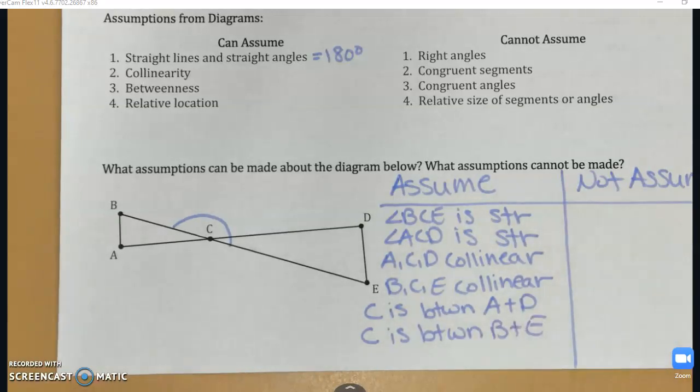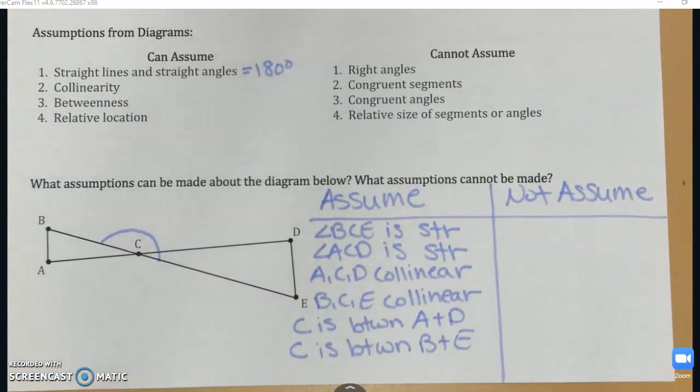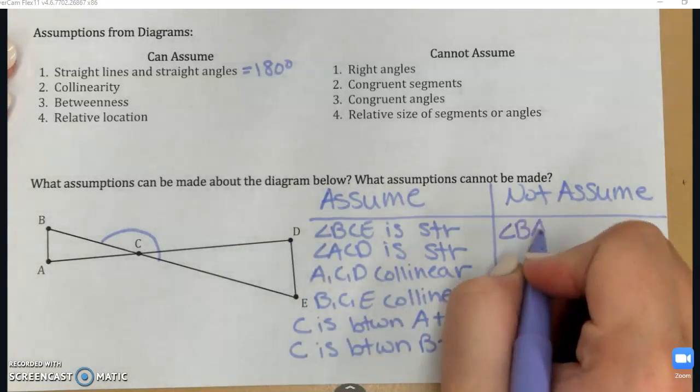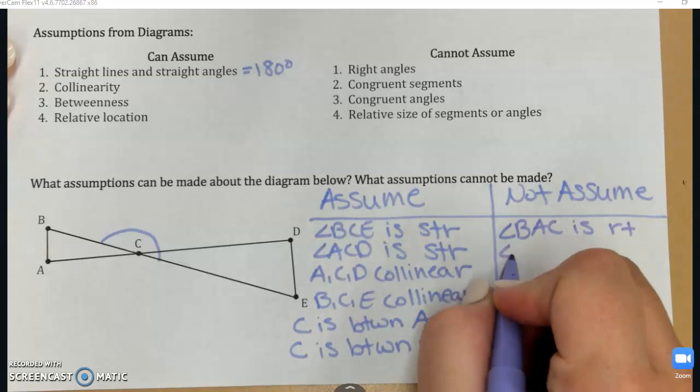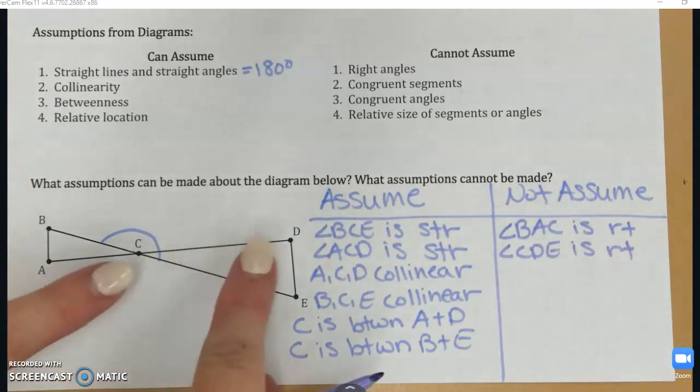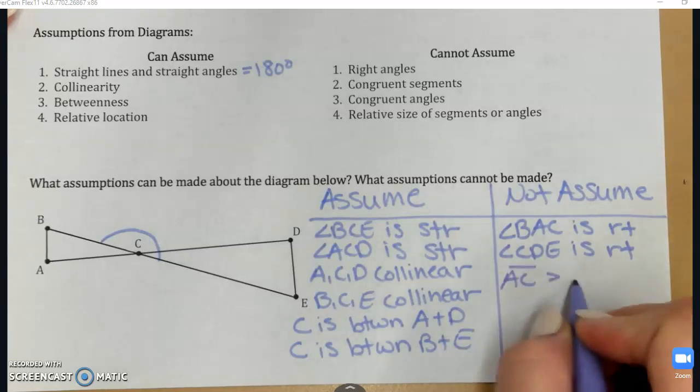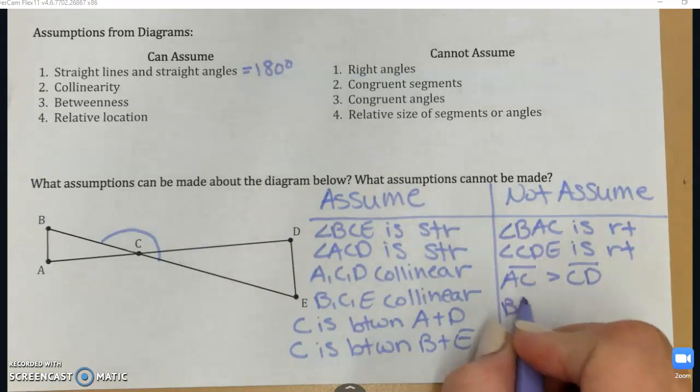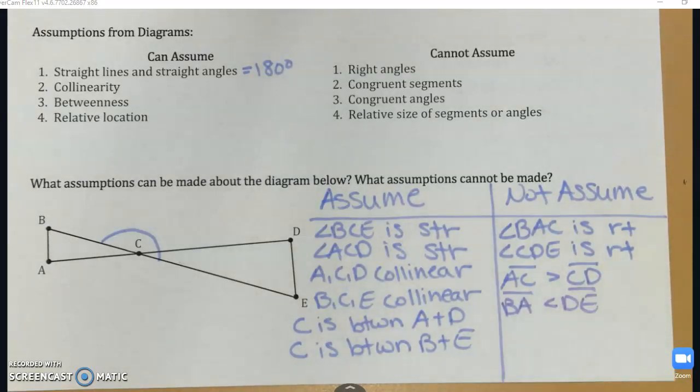So those are all things that are safe to assume from this given picture. Now some things that might look to be true, but if I'm not explicitly told, I cannot just assume. It does kind of look like I have right angles here. Like angle BAC is a right angle. Angle CDE looks like a right angle. It looks like segment AC is bigger than segment CD. It also might look like segment BA is shorter than segment DE. And many, many more. So even though these look like they're true, we can't solve problems assuming that they are if we haven't been told otherwise.